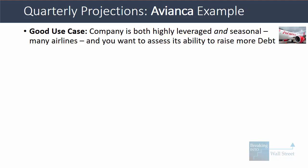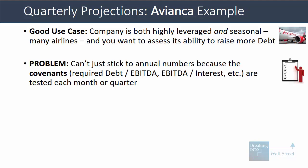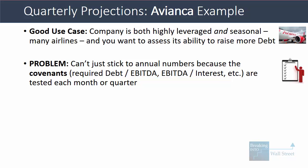A good use case for quarterly projections is when a company is both highly leveraged and seasonal at the same time. Many airlines fall into this category, as do a lot of consumer and retail companies. We're analyzing the company not to value it, but because we want to assess its ability to service its existing debt and possibly to raise more debt in the future. The problem with this scenario is that if we just stuck to annual numbers, we wouldn't be getting an accurate picture because the covenants — such as a required debt-to-EBITDA ratio or required EBITDA-to-interest ratio — are tested each month or each quarter or sometimes even each week.